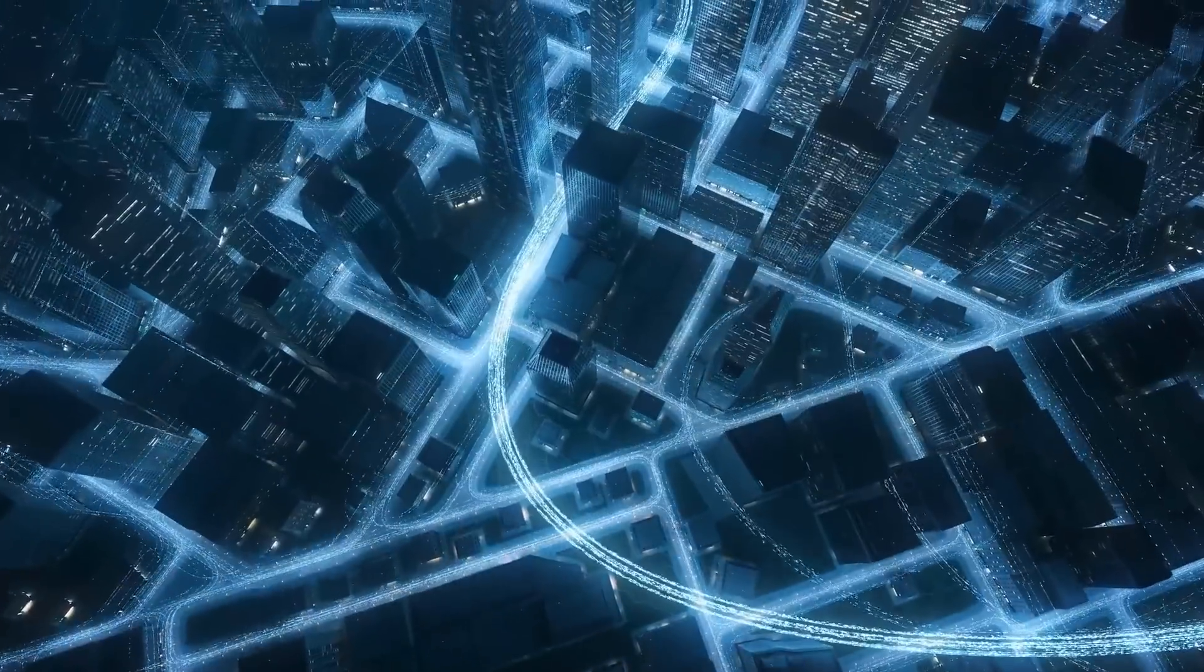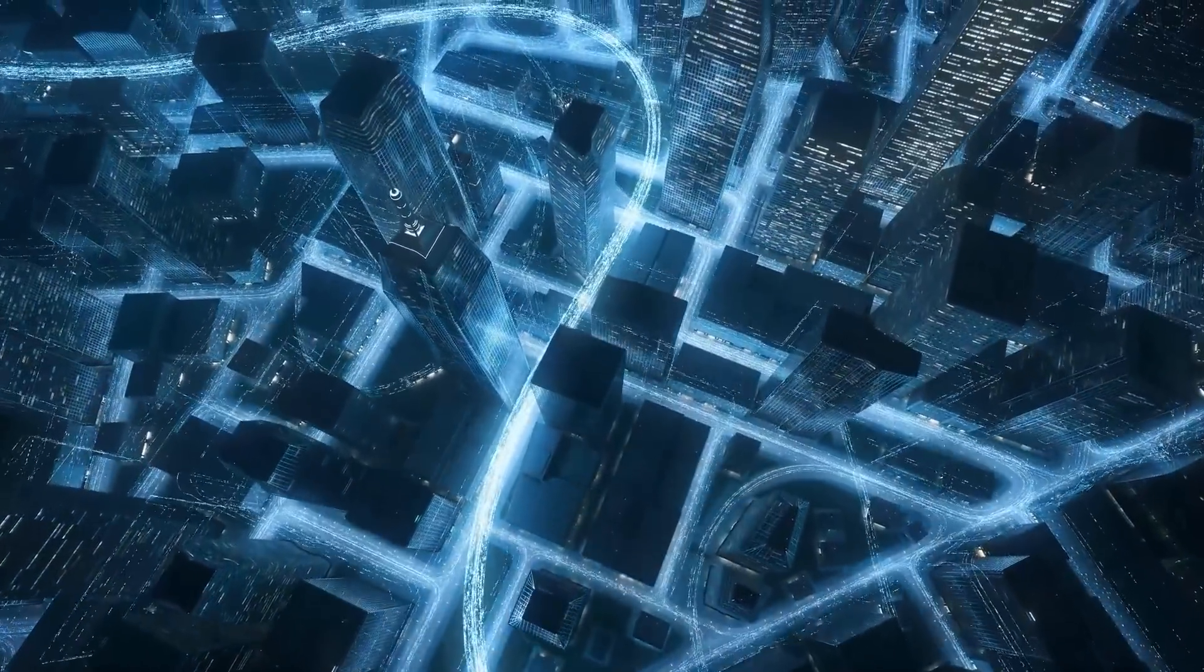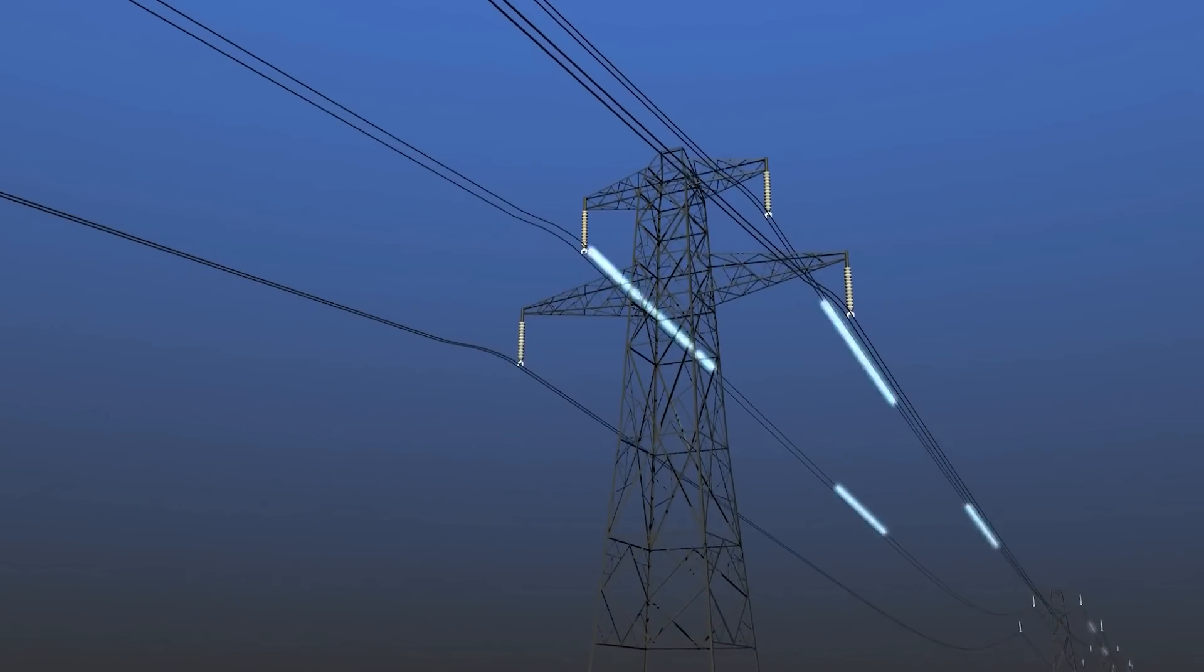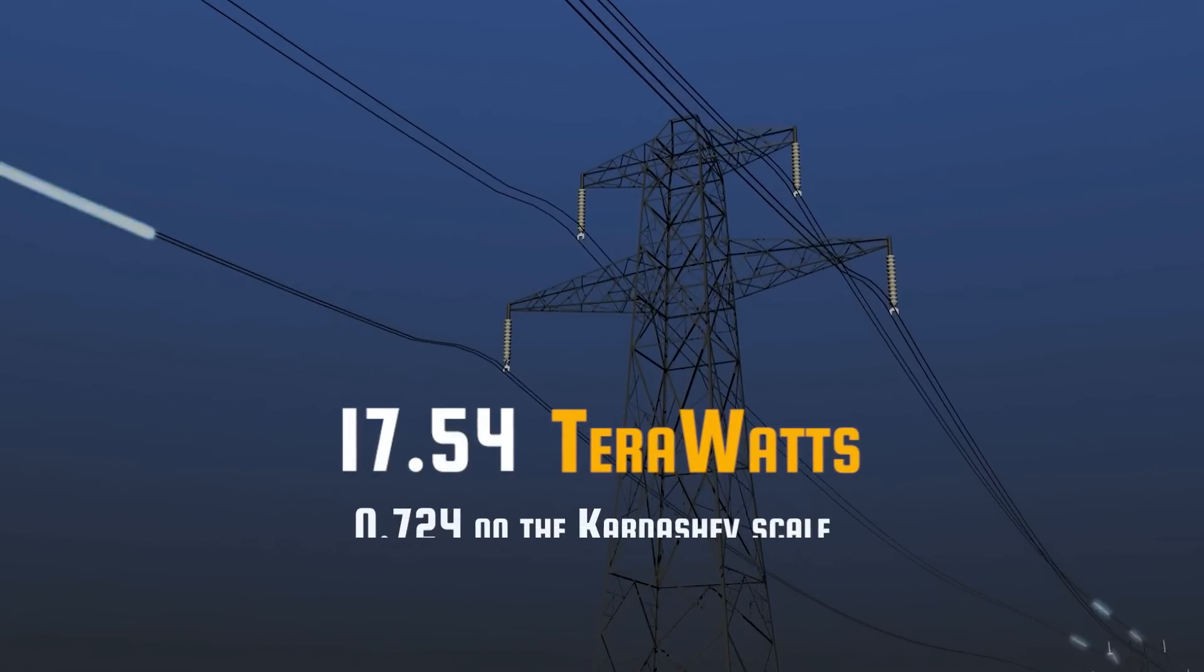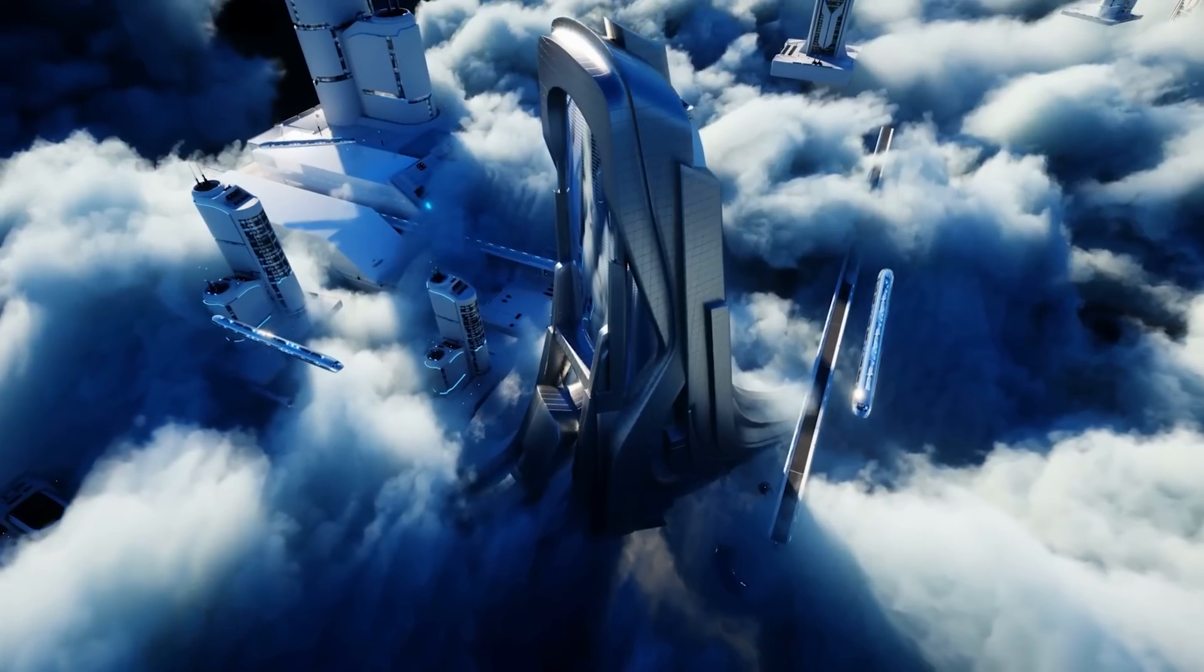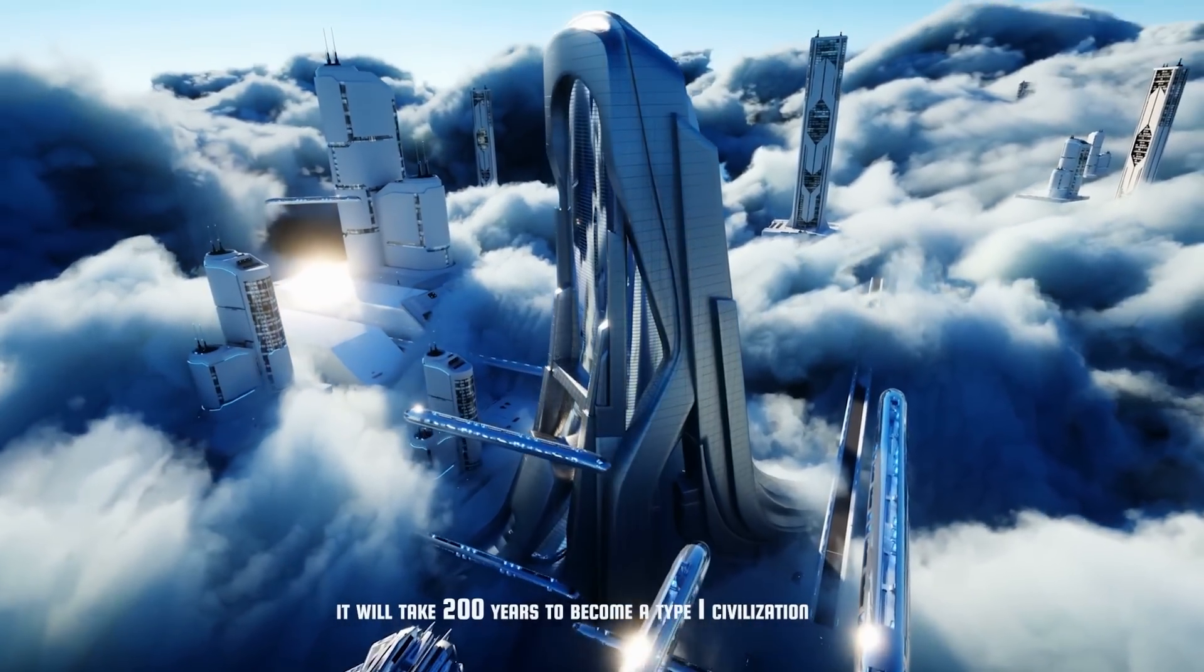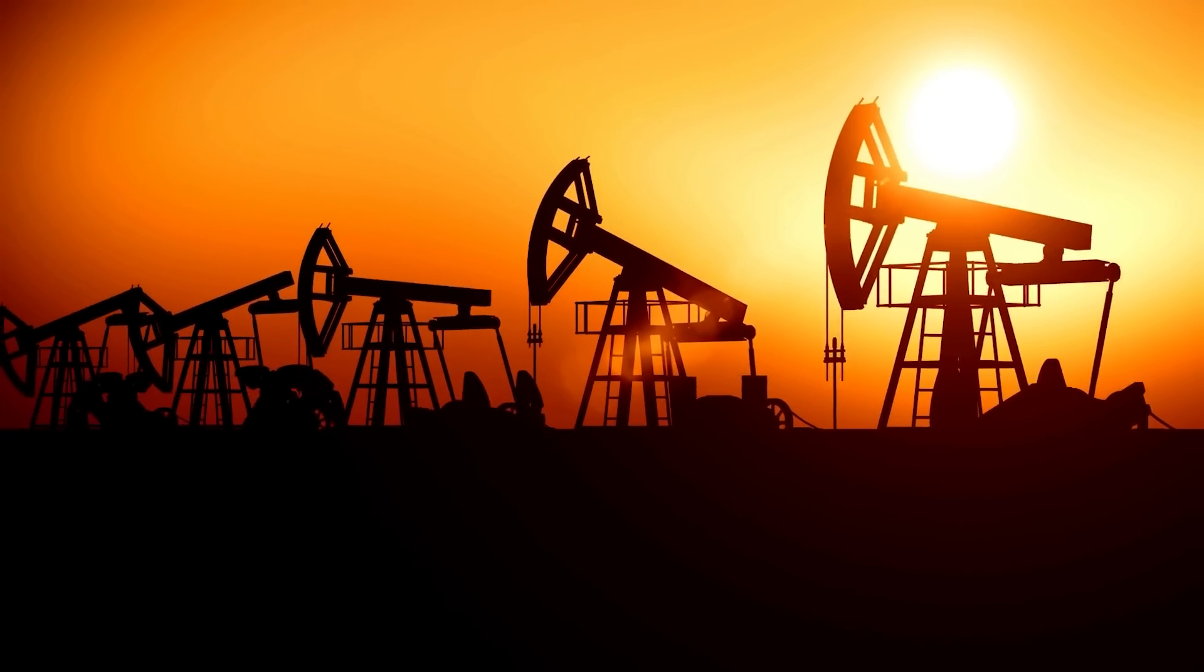In contrast, the human race has not yet managed to take advantage of 100% of any energy. Still, we are on the right track. Today, the production of electrical energy reaches 17.54 terawatts, equivalent to 0.724 on the Kardashev scale. At this rate, it will take more than 200 years to become a Type 1 civilization. Fortunately, things can accelerate if we leave aside fossil fuels.